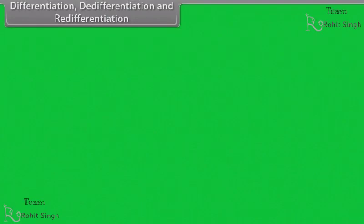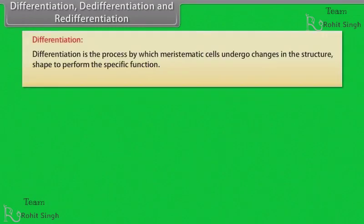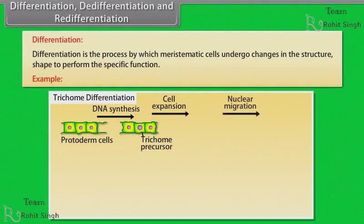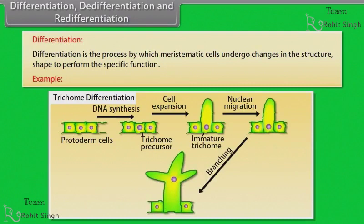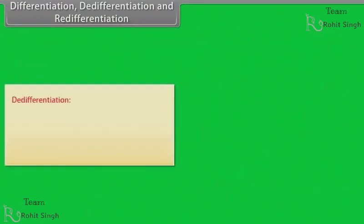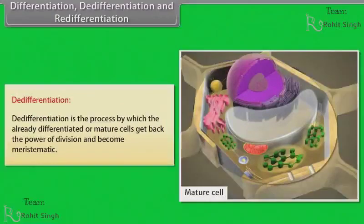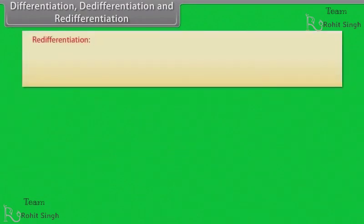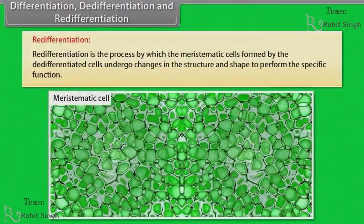Differentiation is the process by which meristematic cells undergo changes in structure and shape to perform specific functions. For example, after DNA synthesis of protoderm cells, cell expansion takes place forming immature trichome; then nuclear migration takes place, branching occurs, and it reaches the maturation stage. De-differentiation is the process by which already differentiated or mature cells get back the power of division and become meristematic. Re-differentiation is the process by which meristematic cells formed by de-differentiated cells undergo changes in structure and shape to perform specific functions.